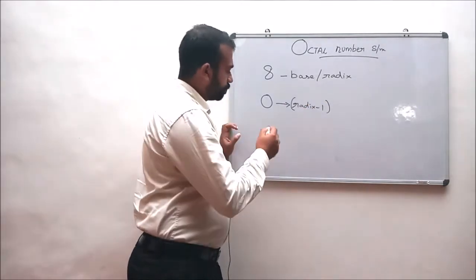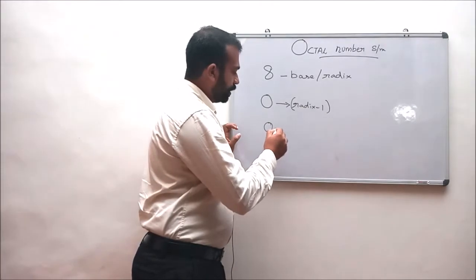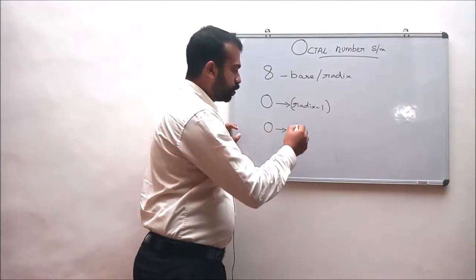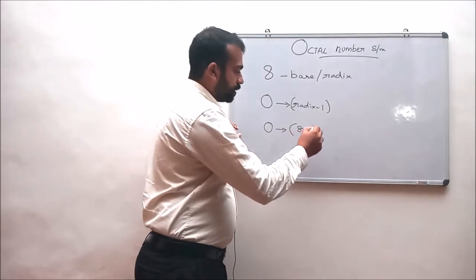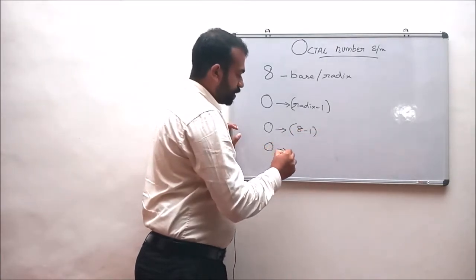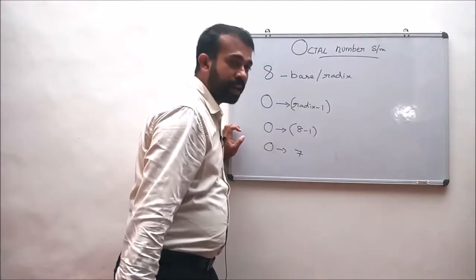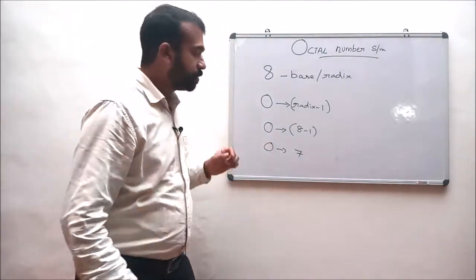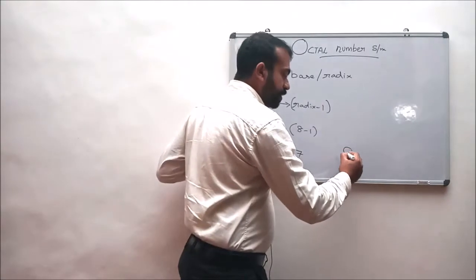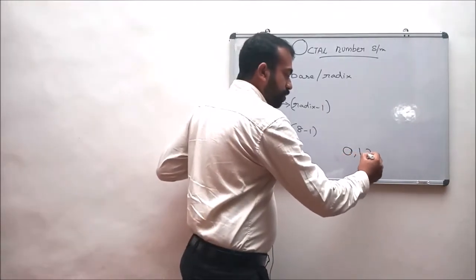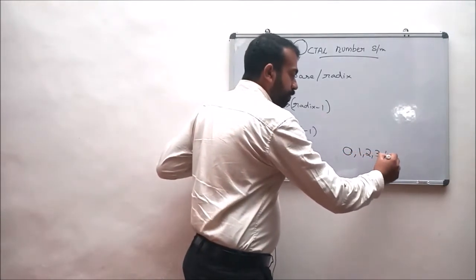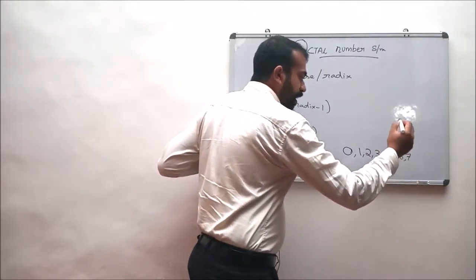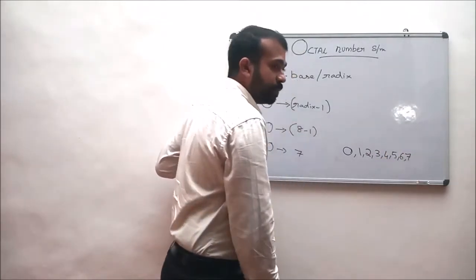Here in the octal number system, the radix value is 8, so the limit of numbers ranges from 0 to 8 minus 1, that is 0 to 7. This simply means that the total number of digits available in this number system are 0, 1, 2, 3, 4, 5, 6, and the last digit available is 7.